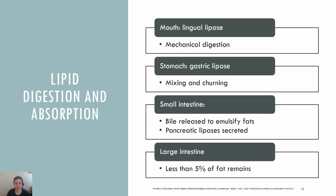Now that we've covered what fats are and their benefits, let's review how they're digested and absorbed in the body. In the mouth, lingual lipase, an enzyme, is released along with a small amount of phospholipids as an emulsifier, which starts the process of breaking down triglycerides. Fats start to become tiny droplets and separate from watery components. Once in the stomach, the mixing and churning motion helps to disperse food particles and fat molecules. Gastric lipase is secreted, which contributes to the further breakdown of triglycerides to diglycerides and fatty acids.